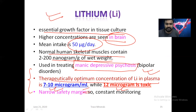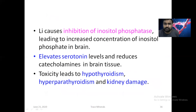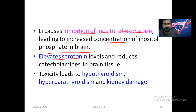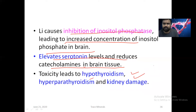Lithium has a narrow safety margin. It causes inhibition of inositol phosphatase, leading to increased concentration of inositol phosphate in the brain, elevated serotonin levels and reduced catecholamines in the brain tissue. Toxicity includes hypothyroidism and hyperparathyroidism. Key points to remember: lithium has a narrow safety margin, 7 to 10 is the optimum range, above 12 it is toxic, and it is used in mania and bipolar disorder.